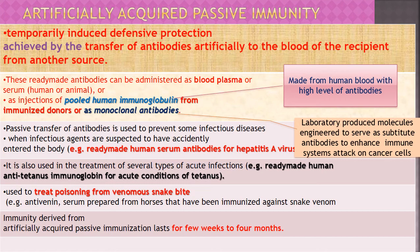When you centrifuge blood, the upper portion separates out as plasma while cells settle at the bottom. Serum is blood plasma minus the fibrinogens — blood plasma contains fibrinogens, but serum does not. These ready-made antibodies can be administered as plasma or serum, which can be of human or animal origin.